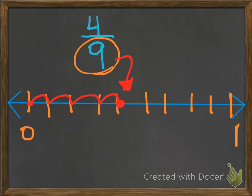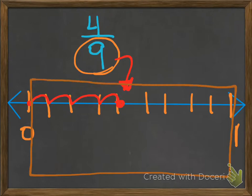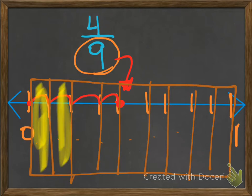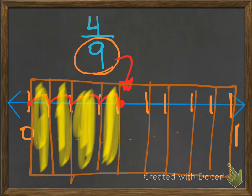Like we showed before, we can divide it up into 9 equal parts: 1, 2, 3, 4, 5, 6, 7, 8, 9. We can shade in just what we need: 1, 2, 3, 4. That's where we go on our number line, right there.